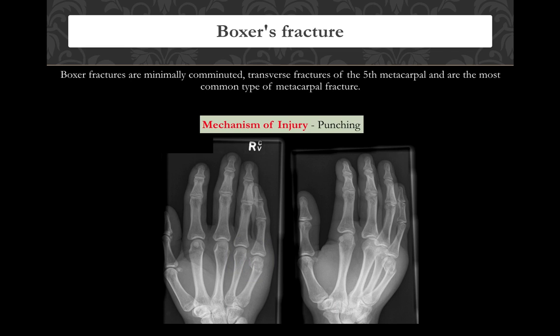Boxer's fracture, also called street fighter's fracture, involves the neck of the fifth metacarpal. If asked the most common injury in boxers and boxer's fracture is an option, that is the answer. If boxer's fracture is not an option, then choose Bennett's fracture. Thank you for your patience — upcoming lectures will cover fractures of the spine, pelvis, and lower limb. Please subscribe to MedMedical to get all updates.